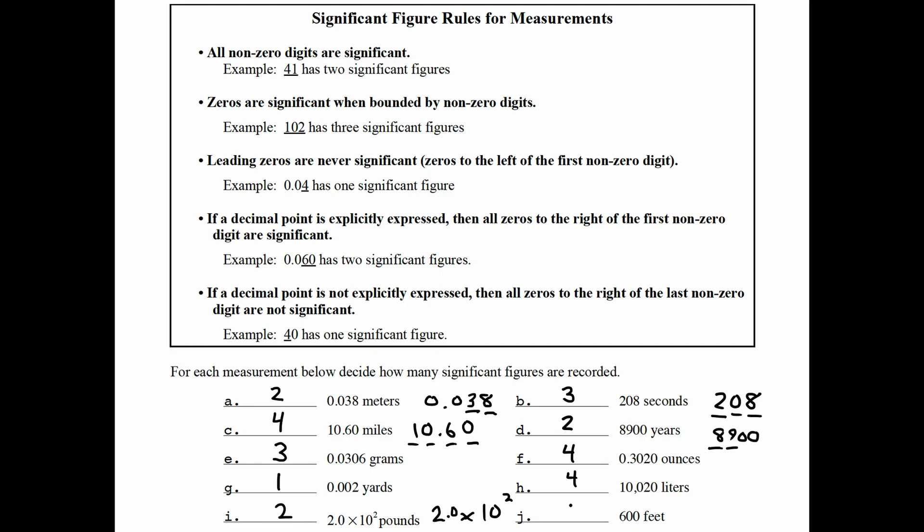And the number 600 feet has actually only one significant figure. If they wanted it to have three, they should have put a decimal point at the end. But they didn't.